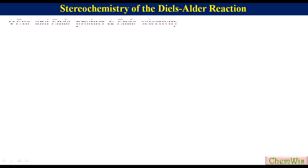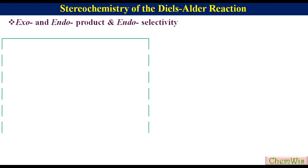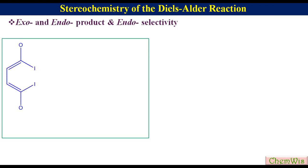Exo- and endo-product formation comes into existence when at least one terminus of the diene has two different groups. Let's have this hypothetical diene. I have labeled the outer group as O and the inner group as I.